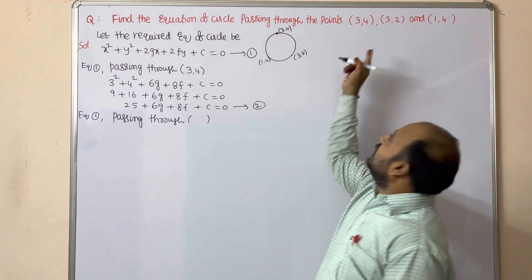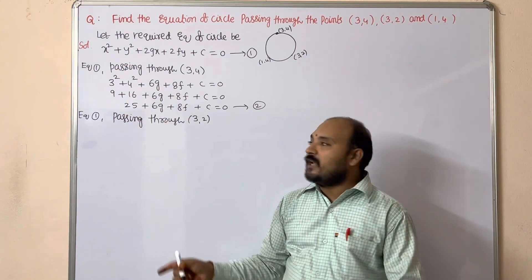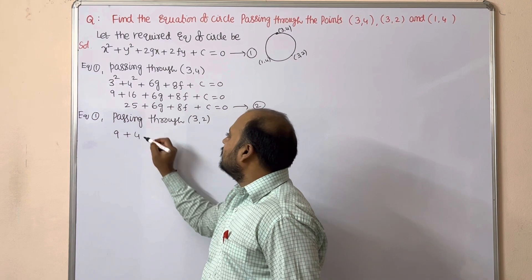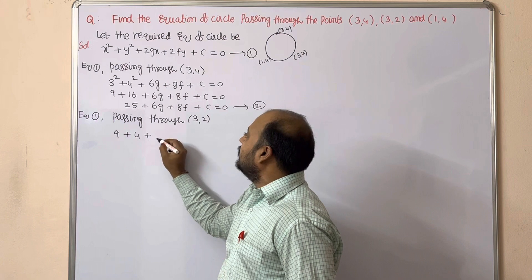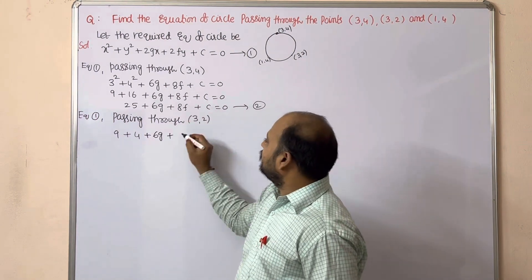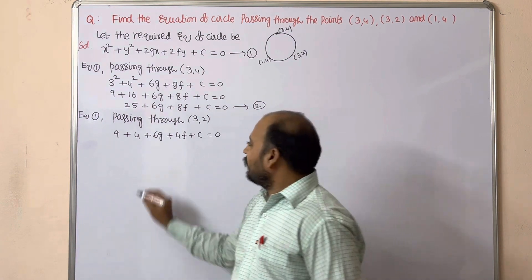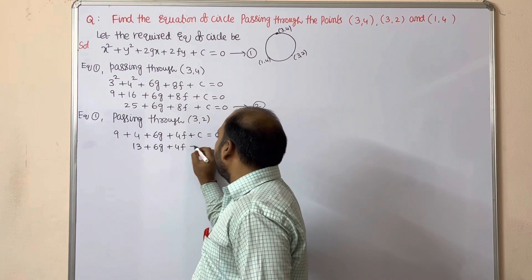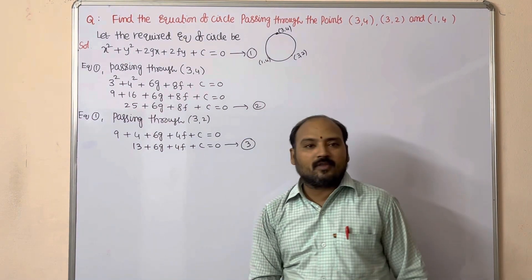Substituting the second point (3,2) into Equation 1: 3² + 2² + 2g(3) + 2f(2) + c = 0, which gives 9 + 4 + 6g + 4f + c = 0, so 13 + 6g + 4f + c = 0. Keep this as Equation 3.